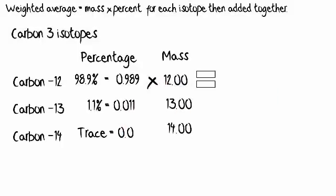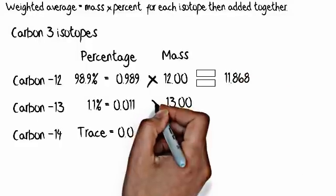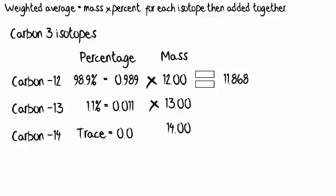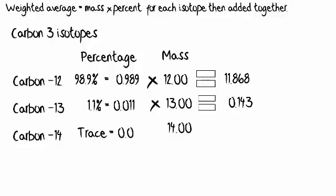For carbon-14, there's only a trace amount, so we're going to say it's 0.0 percent, even though that's technically not correct. What we do is we take our percentages and multiply them times the mass.